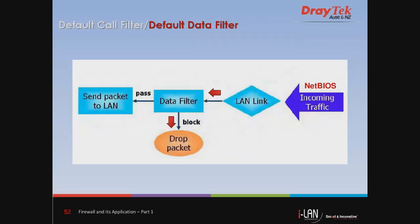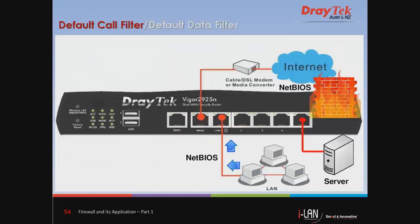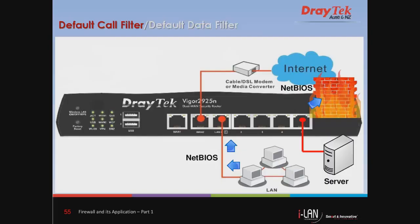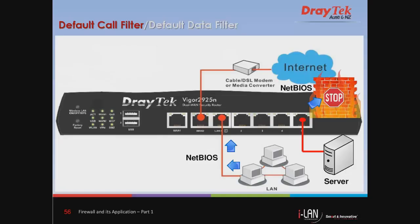In this illustration, the traffic is coming from LAN and going out to LAN. The data filter is applied and checks packets according to the filter rules. If illegal, the packet will be dropped by the router; if legal, the packet will pass. In the network diagram scenario, a server is added to the LAN. When one of the computers sends NetBIOS traffic, the data filter is applied and will stop the packet. While legal traffic like Telnet protocol will be allowed to pass and access the server.